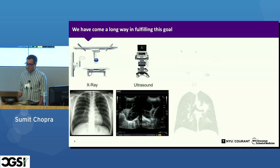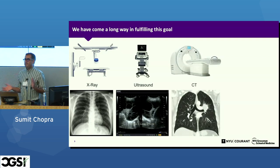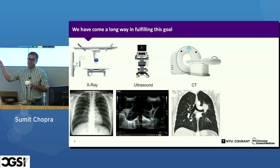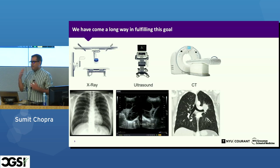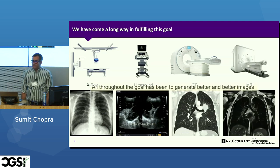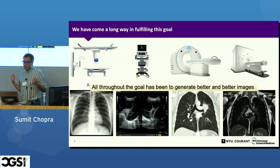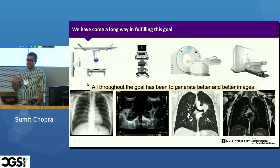We've also progressed beyond just two modalities. You have X-rays, ultrasounds, CTs — which is essentially a three-dimensional X-ray where a patient lies in a donut-shaped machine and an X-ray revolves to take pictures from different angles called projections, which are stitched together to create a 3D image — and of course MR. Throughout all of this, in order to diagnose what's wrong with a person, the race has always been to generate better and better images.